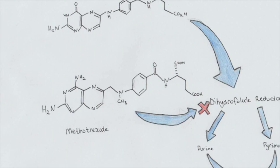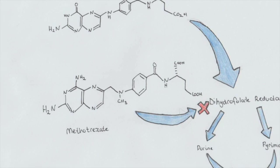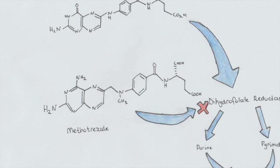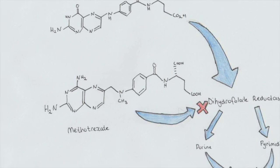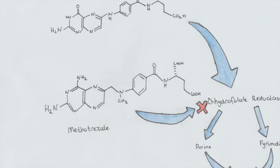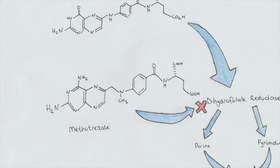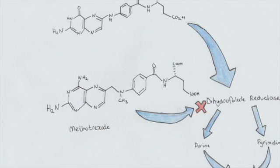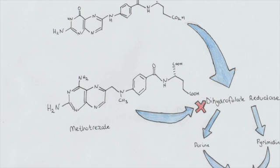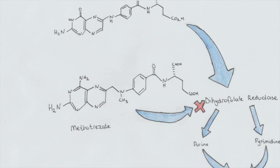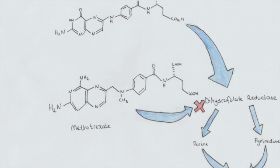Let's talk about methotrexate and why it is used in the treatment of rheumatoid arthritis. In high doses, methotrexate is used in chemotherapy. However, in smaller doses, it may be used in rheumatoid arthritis to target the rapidly dividing immune cells, such as macrophages and the Th1 cells.